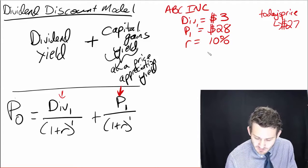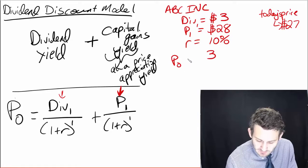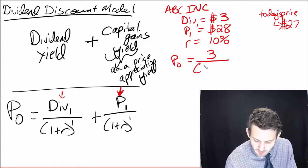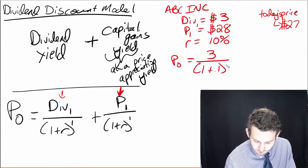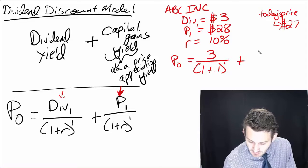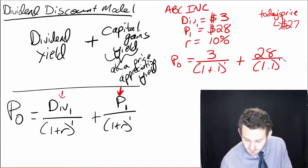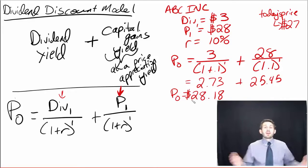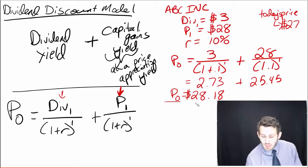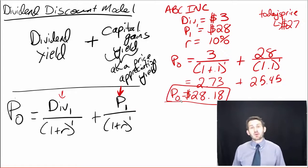So the way we're going to plug this stuff in is we're going to have our price today is equal to 3 divided by 1 plus 0.1 to the first power, plus 28 divided by that 1 plus 0.1 to the first power. So we say our price here is $28.18. We just do the math through, and we come up with that basic valuation.